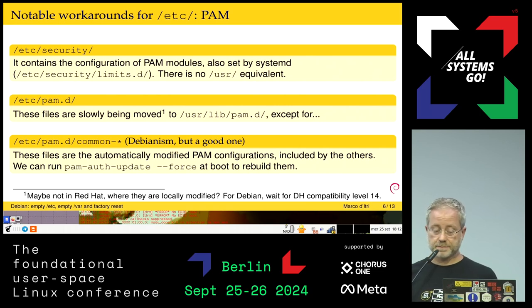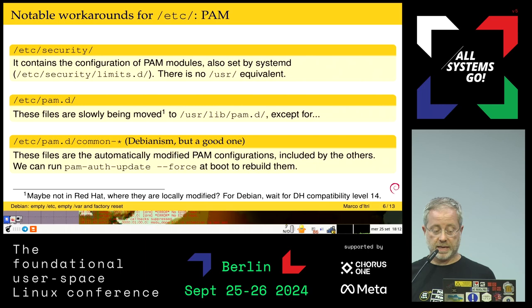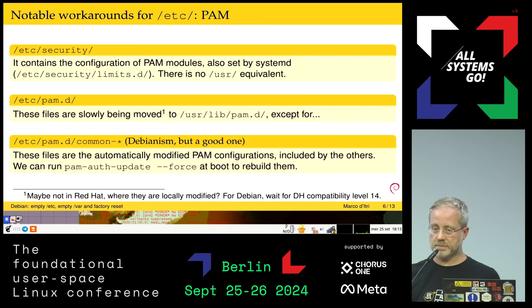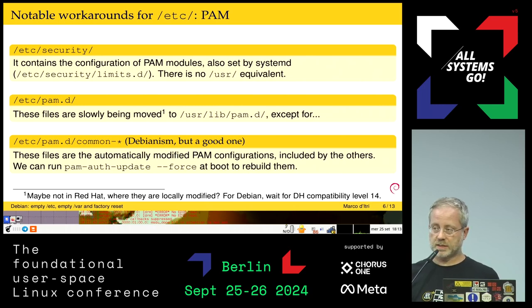/etc/pam.d contains the configuration for the stacking of the PAM modules. There is actually a plan to move them to /usr. Debian will do this soon in the near future, time by time, but some files are left. These common files are included by the others — that's a Debianism, but I think it's a good one because it means that usually you do not need to modify the files shipped by the packages. The good news is they can be recreated on boot with pam-auth-update, and I just wrote a systemd unit to do that on the first boot.